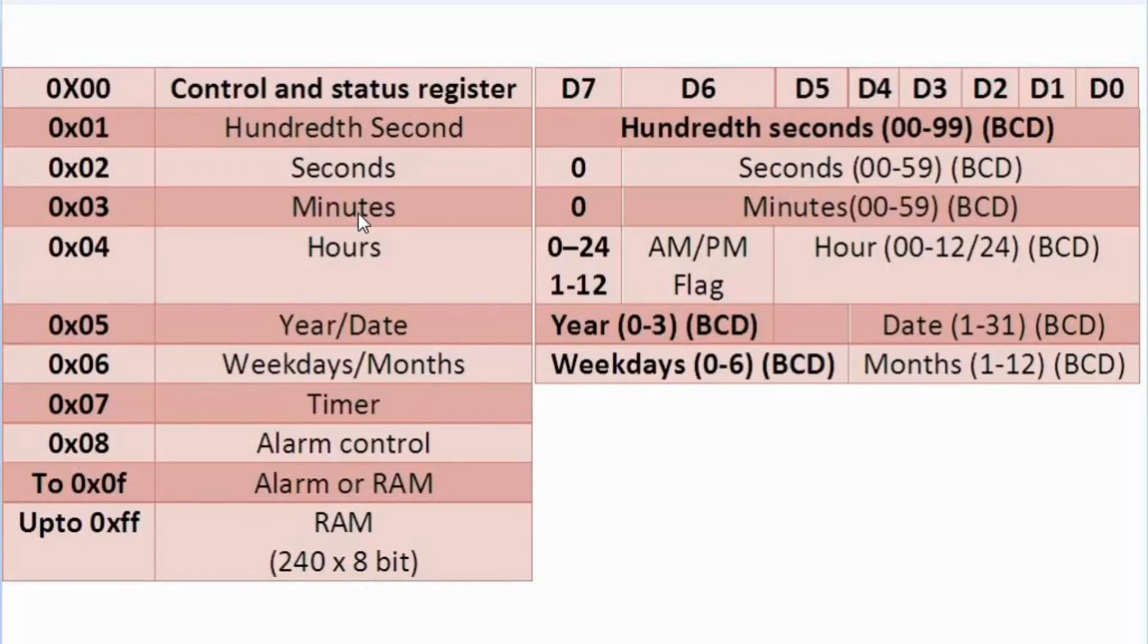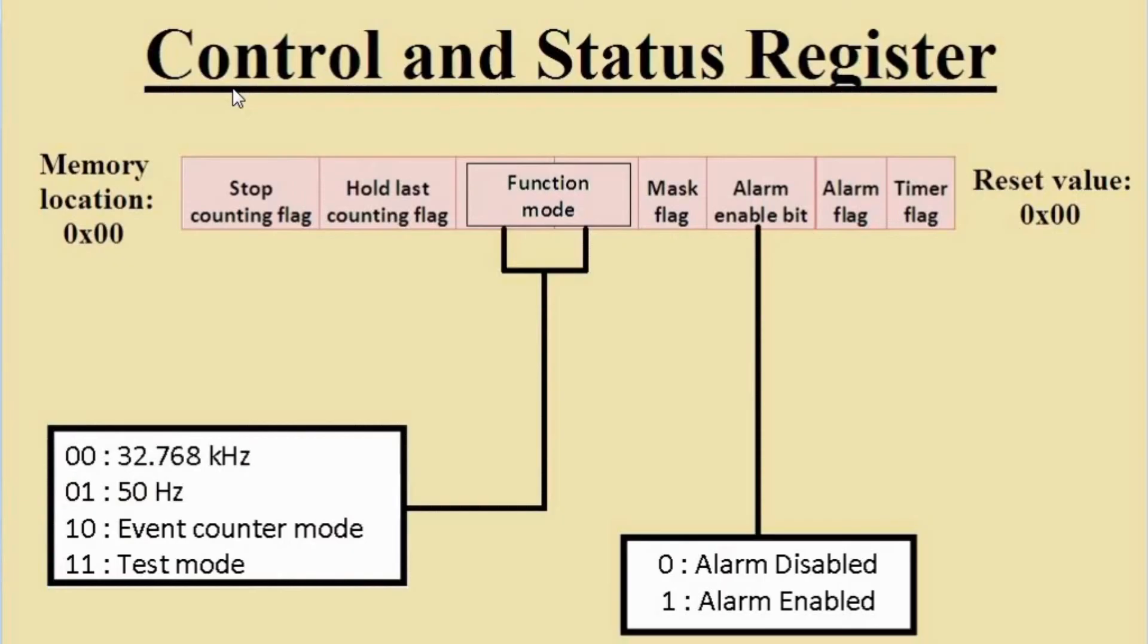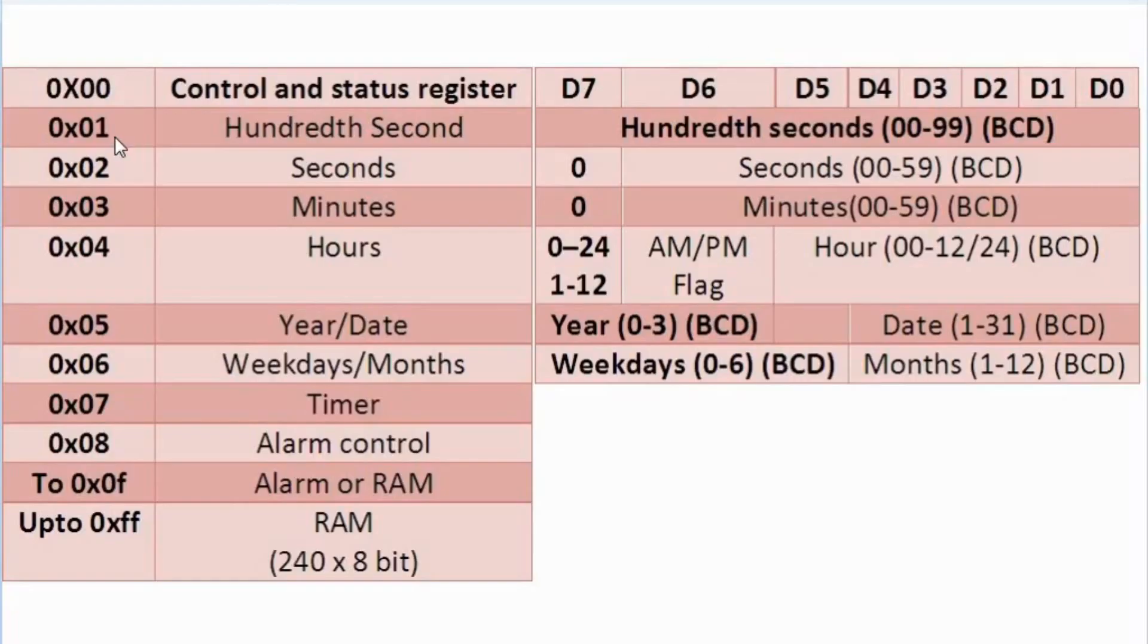This is internal RAM of RTC. At memory location 0 there is control and status register, memory location 00 and the reset value is 00. We will keep this by default. On first memory location there is 100th second, on second memory location there is seconds. This register will count from 00 to 59 in BCD. Same, minute will work same as seconds.